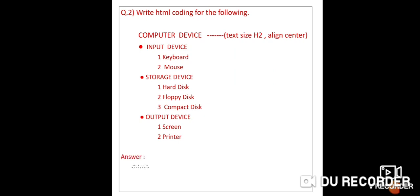See the answer. The starting tag is HTML. For 'Computer Devices' as H2 centered, write: H2 align="center" then 'Computer Device' then /H2. Remember: the spelling of center in HTML is C-E-N-T-E-R — not 'centre'. Always remember this.